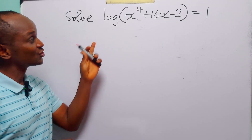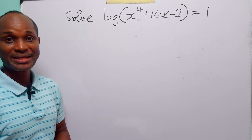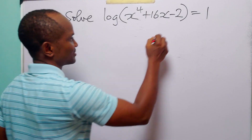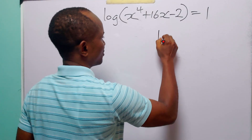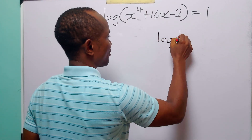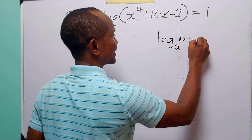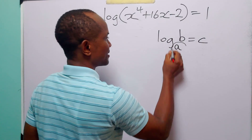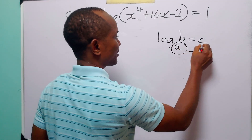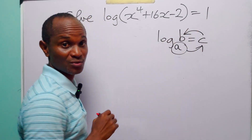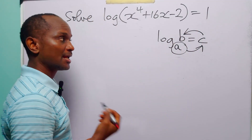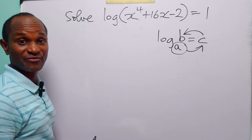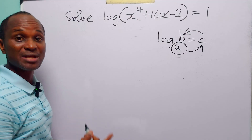Hello and welcome. To solve this logarithmic equation we must remember that when we have a statement such as log_a(b) = c, this simply means that a to the power c is equal to b. When we write log without specifying the base, it means we are working in base 10 — the common logarithms.